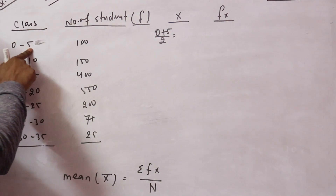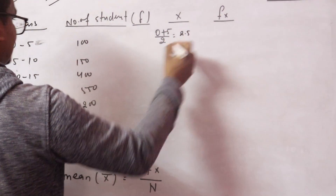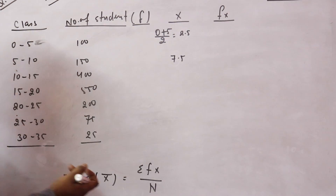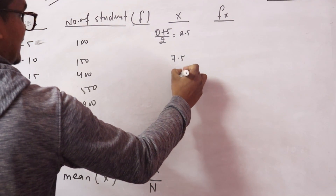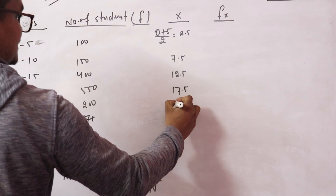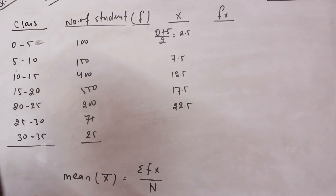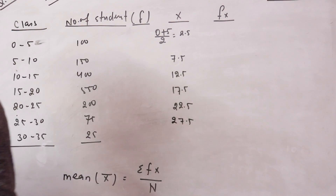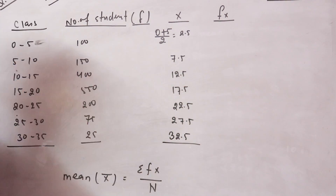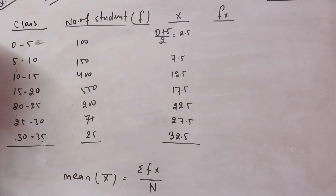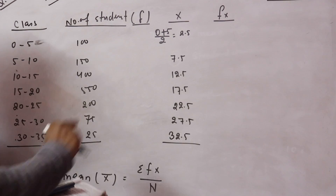Calculating midpoints — 1st zone divided by 2: 2.5; 5 to 10 midpoint: 7.5; next: 12.5; then 17.5; then 22.5; then 27.5; then 32.5.